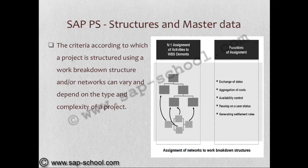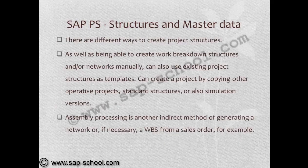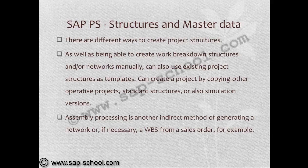When activities are assigned to WBS elements, the assignment functions include exchanging of dates, aggregation of costs, availability control, passing on a user status, and generating settlement rules. There are different ways to create project structures: work breakdown structures and networks can be created manually, or existing project structures can be used as templates. If a project is of a similar nature or category, templates can be used to create a new project structure. Projects can also be created by copying other operative projects, standard structures, or simulation versions.